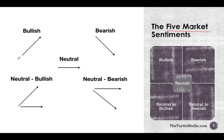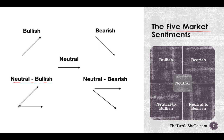Bullish means that if I feel that the prices are likely to go up in the market, I am a bullish market participant. If I feel that the prices are going to crash or fall down, I am bearish on the market. If I feel that the market is going to remain flat — it will neither go up nor go down — I am neutral on the market. If I feel that the market is less likely to go down, meaning the market is either likely to go flat or go up, that is called neutral to bullish. In neutral to bullish, chances are the market will either go flat or up, but there is very low probability that it will go down.